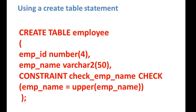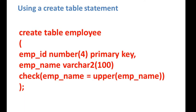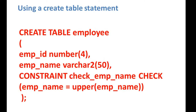There is another method where you write it inline — for example, after empid number with the primary key, and emp_name varchar2(100), you just add a space then write CHECK followed by the condition beside the column definition. This also creates a check constraint using the CREATE TABLE statement and adds it to a column. However, this method is not preferred; it is better to use the explicit CONSTRAINT syntax with constraint name, CHECK, and the condition.